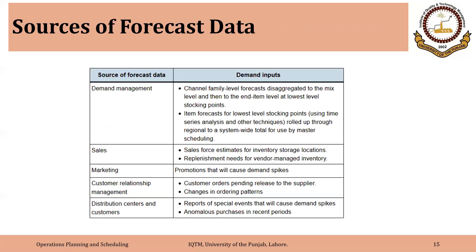From where do we get information for making forecasts? Information can come from different departments — from demand management, sales, and marketing, which are two major sources. It can also come from CRM, which is a module in some ERP software, using data mining or patterns of previous demand to forecast the future. We can also get information from distribution centers and directly from customers. Depending on the type of business, forecast data can come from one source or a combination of sources, which we can then reconcile to make a final forecast. This concludes the introduction to demand forecasting — some terminology and characteristics.